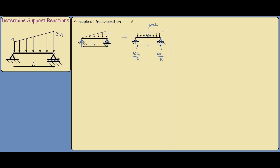For the triangular load, it's a bit more complicated, but we can do the same thing. We can transform this distributed load into a point load, and it would be the area under the distributed load — that's the area of a triangle — which is half W times L.